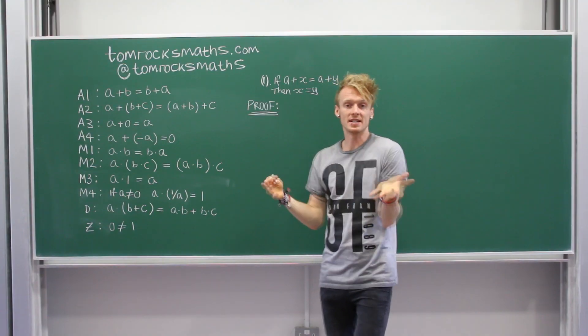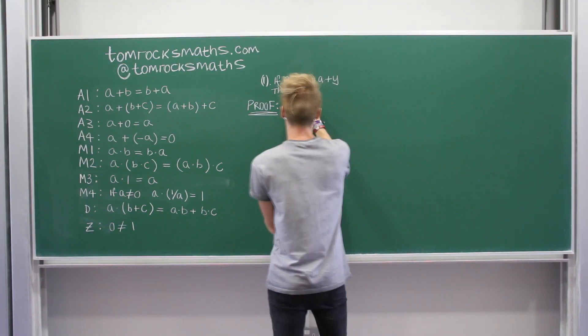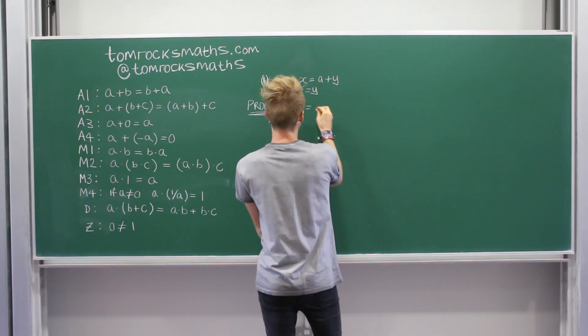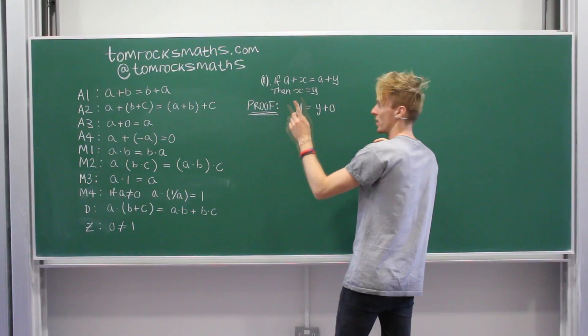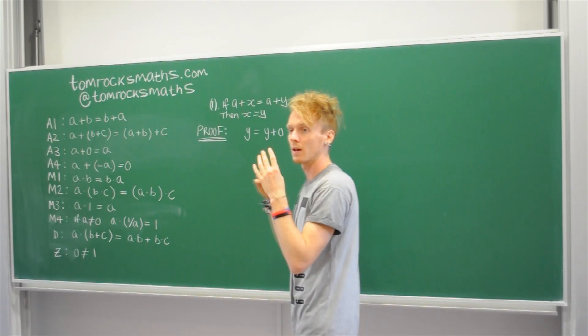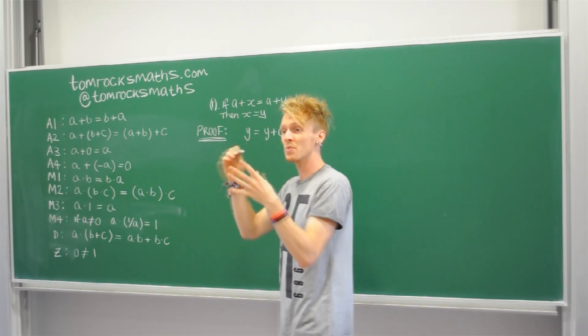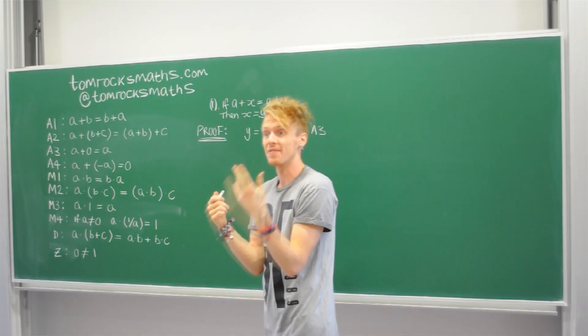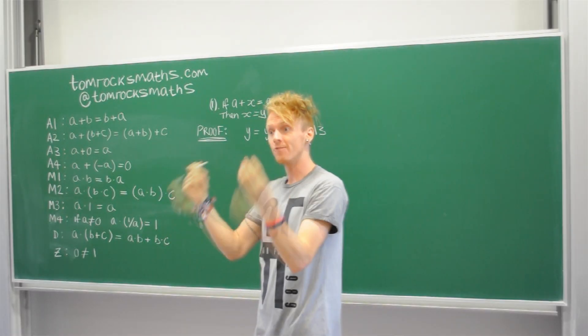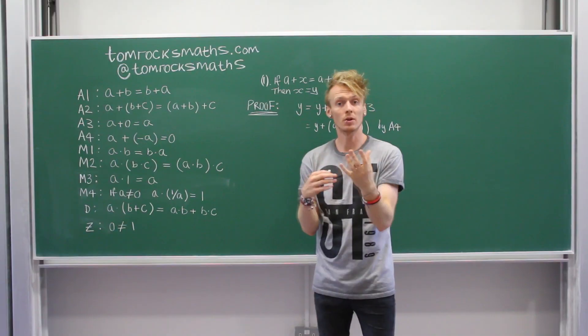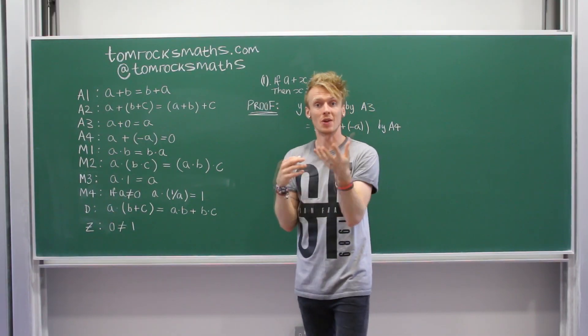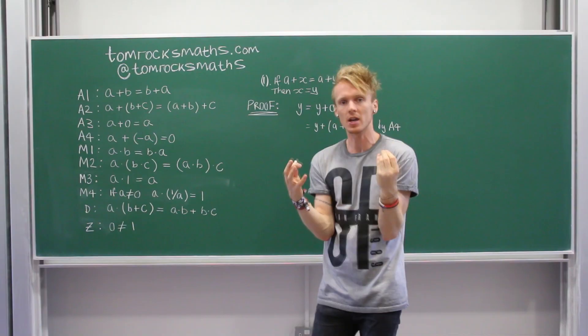So let's start by saying, well, what is y? y equals y plus 0, which we've got from A3. Now, we need to try and introduce our additive inverse. So let's use A4, because we have 0 here, and A4 tells us what 0 is equal to. Now we're going to use number 2, so A2, to change the order of our terms.